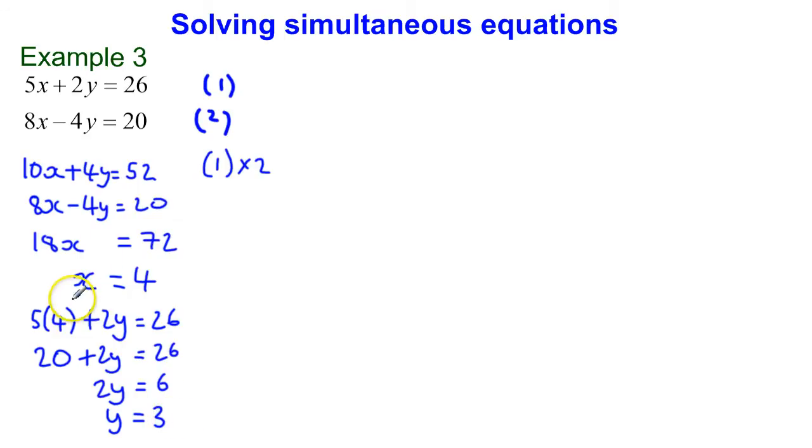Now I know that x is equal to 4 and y is equal to 3. I just want to check this. I used the top equation to work out what y is, so I'm now going to use equation 2 and substitute this into equation 2. So I've got 8x, and I'll write it over here. 8 times x is 4, so 8 times 4, take away 4 times y, which I now know is 3.